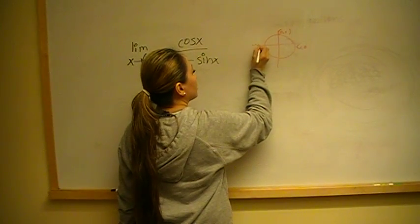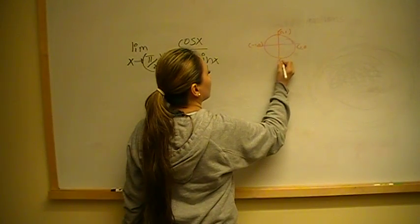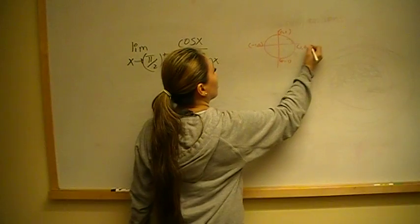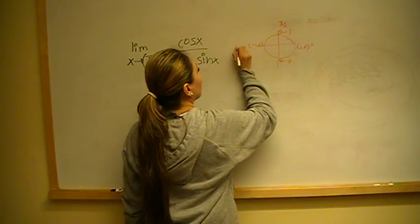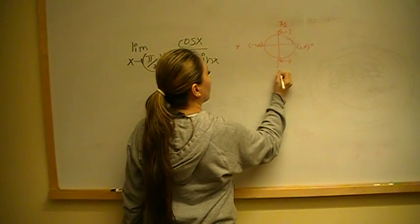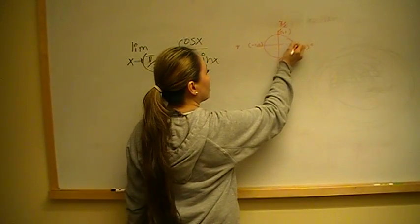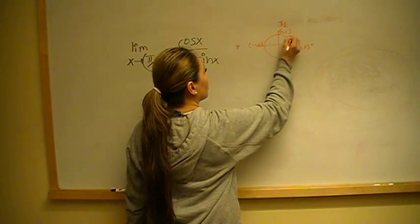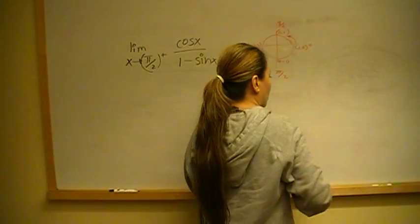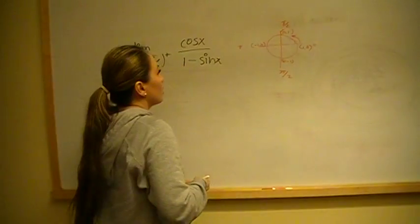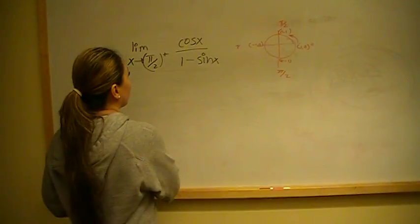Negative 1, 0, and 0, negative 1. This is 0 pi over 2 pi, 3 pi over 2. And we're looking at the limit of that function as we're coming at it from there. So, all right, so let's see what's happening.